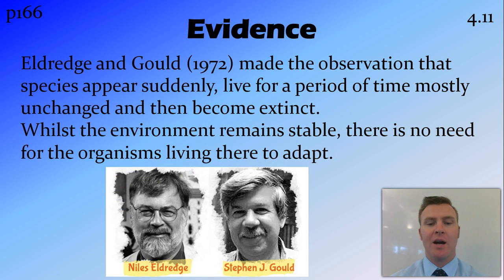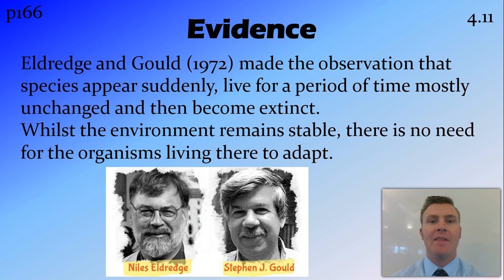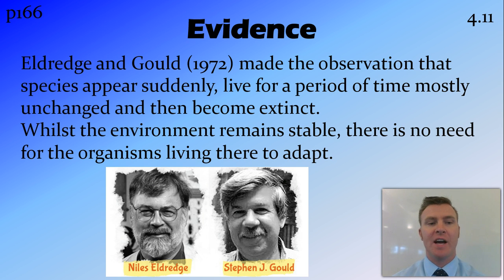Punctuated equilibrium was first put forward by Niles Eldredge and Stephen Gould in 1972. They made the observation that species generally appear very suddenly, then live for a period of time with very minor changes, and then become extinct.